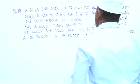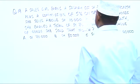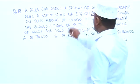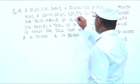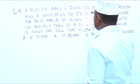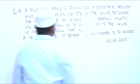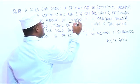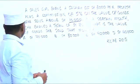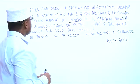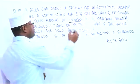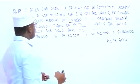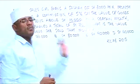A sales girl earns a salary of $3,000 per month, plus a commission of 5% on the value of goods she sells above $10,000. In a certain month, she earns a total of $7,000. What was the value of goods she sold that month?